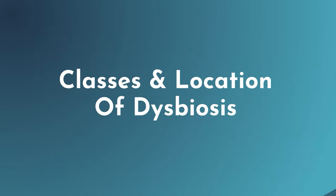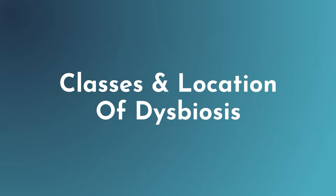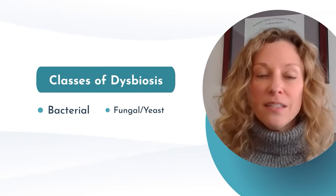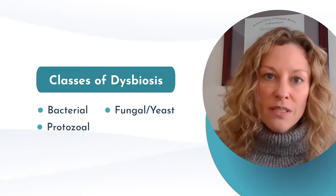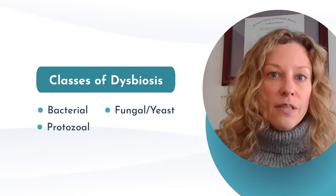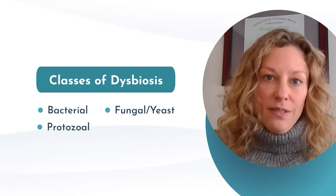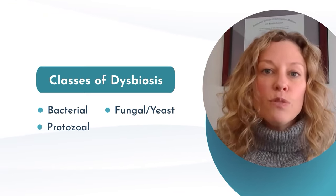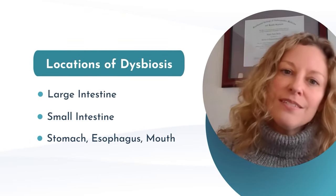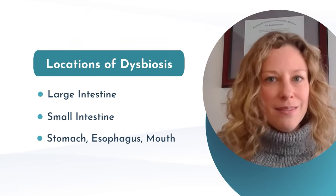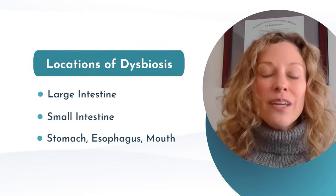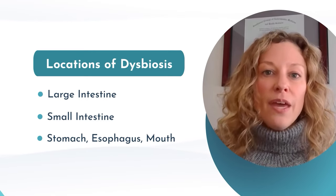Let's talk about the classes and locations of dysbiosis. Classes include bacterial dysbiosis, fungal or yeast dysbiosis, and protozoal dysbiosis. As we spoke about earlier, this could occur in the large intestine, the small intestine, the stomach, or even the esophagus or mouth.